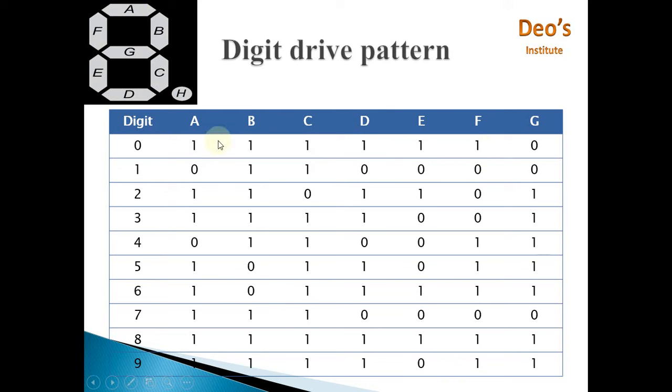To display 1, only B and C will be 1 and rest all are 0. To display 2, only F and C will be off and rest all will be on. So C and F are 0 and rest all are 1.